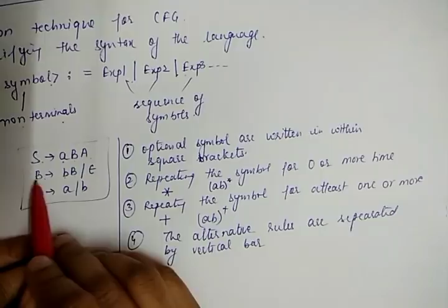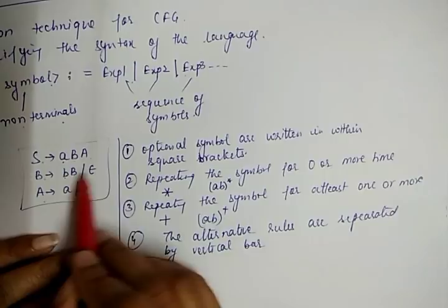For example, this B production has one or more choices, and we can separate these productions by a vertical bar.